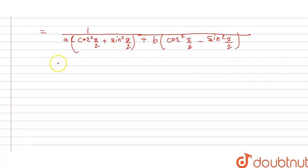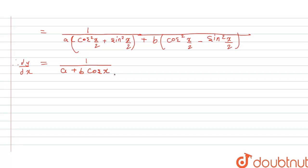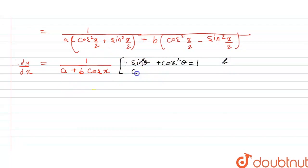In the next step, therefore dy/dx is equal to 1 upon a into — this term becomes 1 — plus b into cos square x by 2 minus sin square x by 2 which becomes cos x. The reasons are: sin square theta plus cos square theta equals 1, so that became 1; and cos square theta minus sin square theta equals cos 2 theta, so putting theta as x by 2 we get cos x. Therefore dy/dx is equal to 1 upon a plus b cos x.